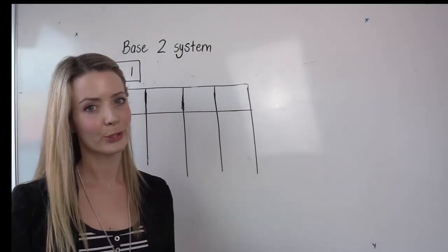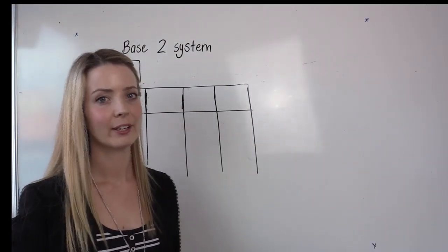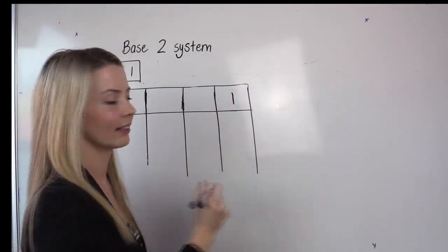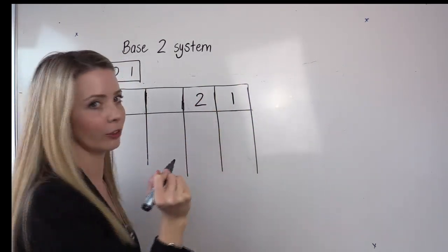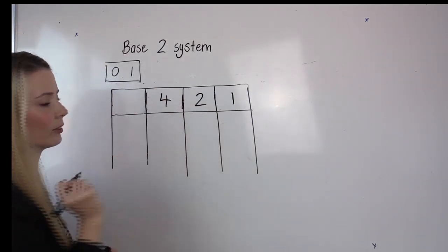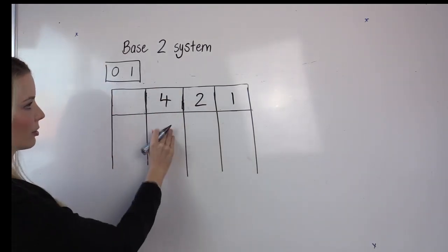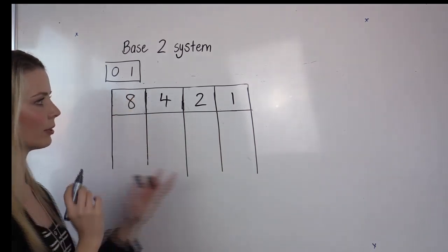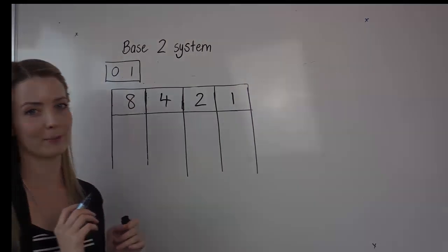Each column is two times greater than the previous. So we're going to start with one. We've got one, two, now two times greater than four. Two times greater than eight. So we're just going to work with four columns for now.